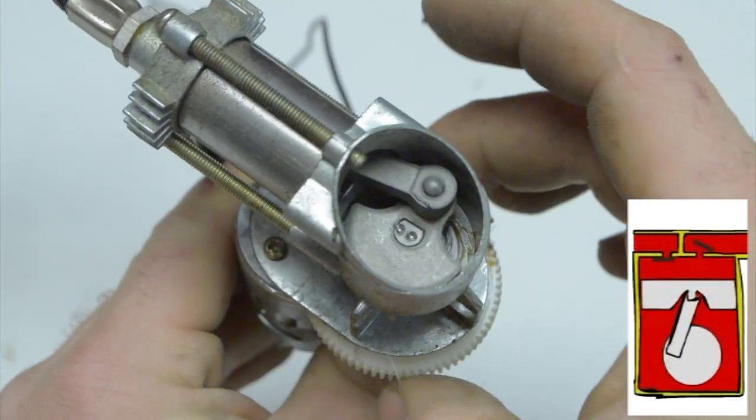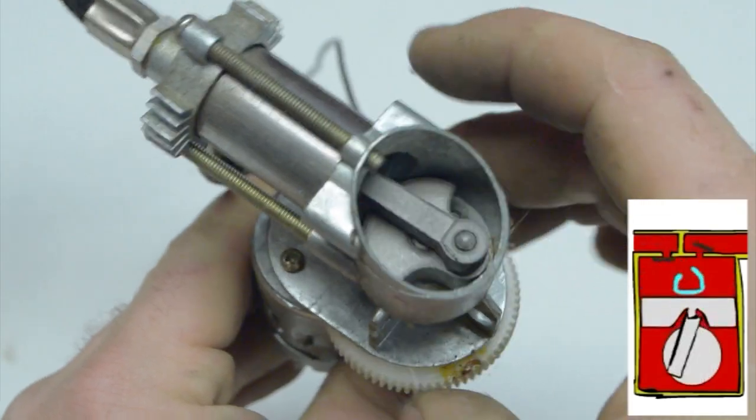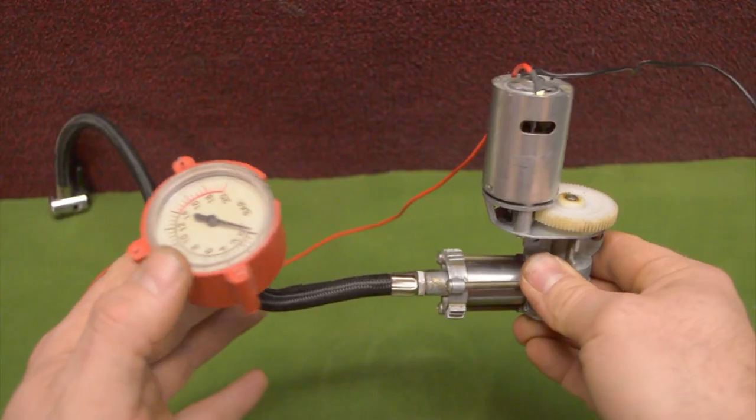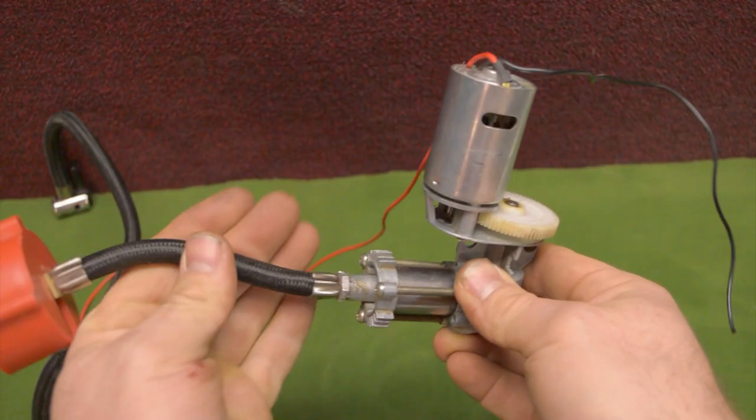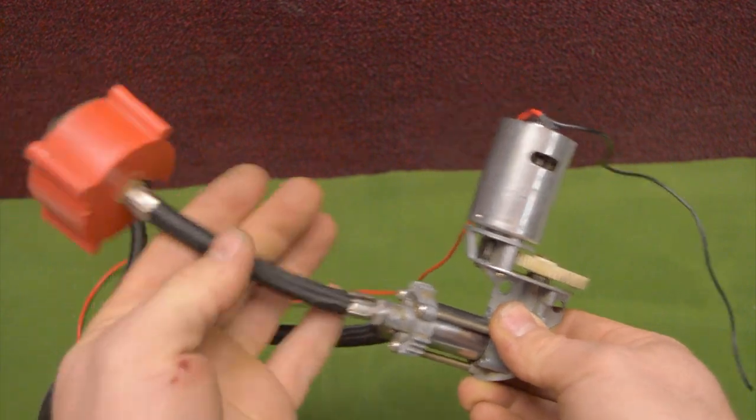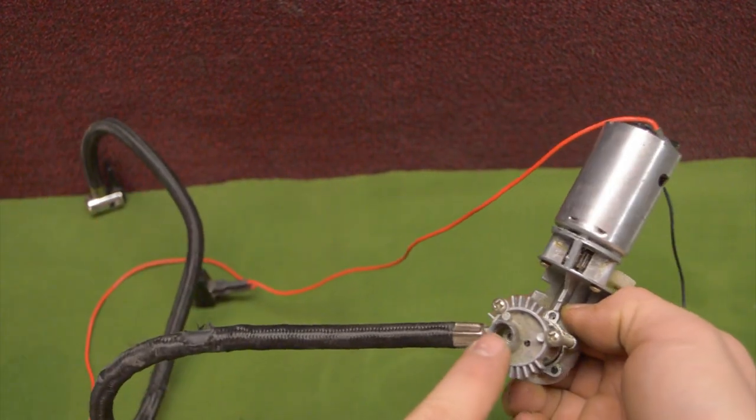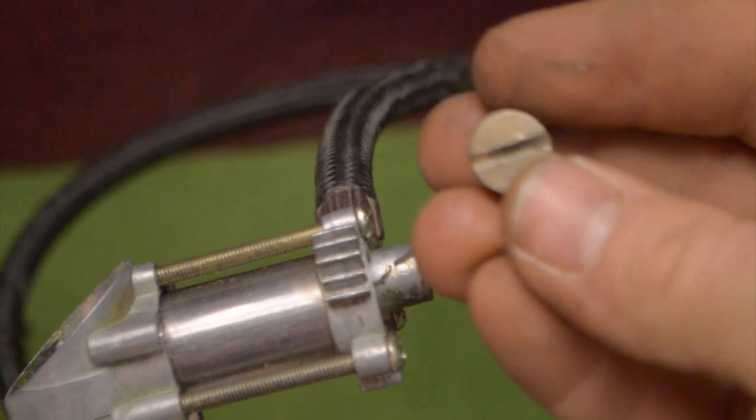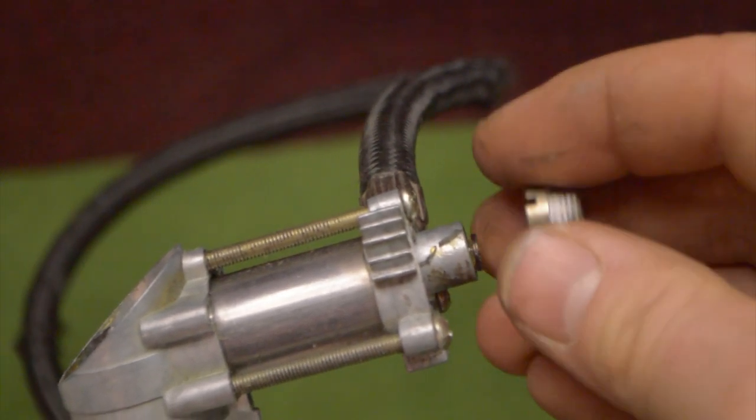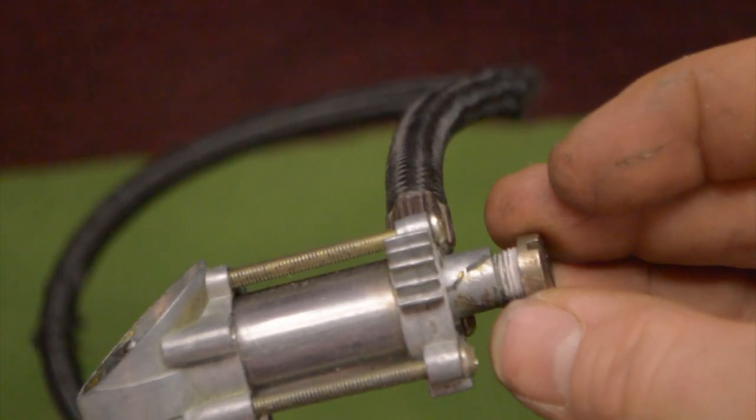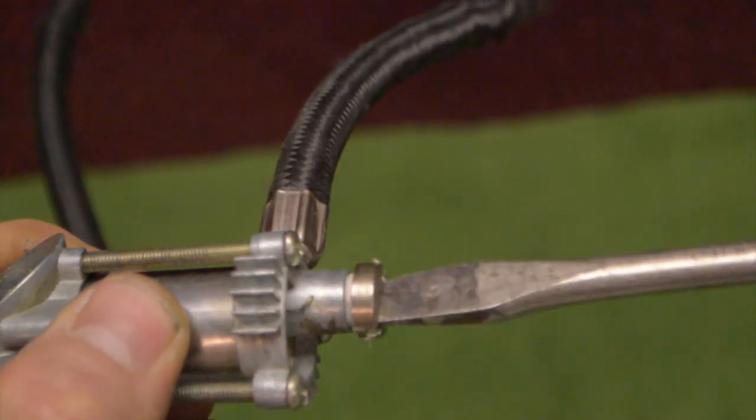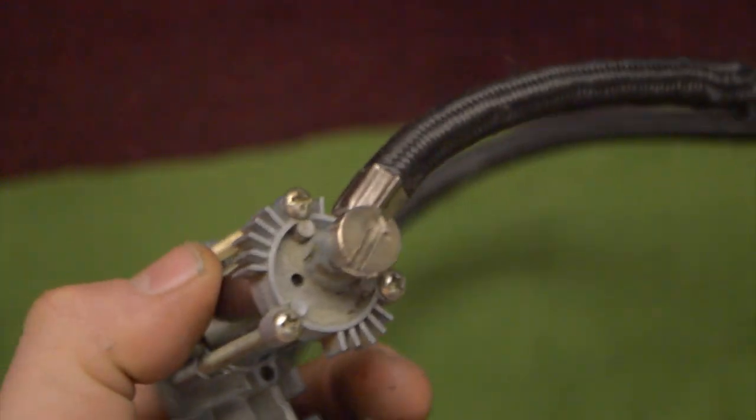Now we have to remove the pressure gauge because it's not necessary, and we have to make something very compact. There is a hole we have to block with a screw, maybe using some Teflon so there are no air leaks.